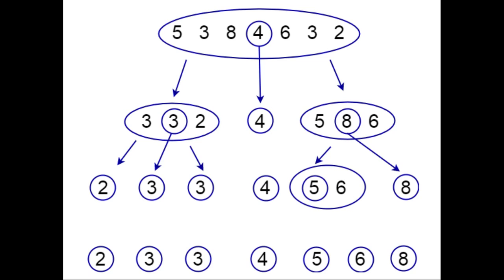Eight is greater than four, so it will be placed on the right side. Six will be compared with four and placed on the right side. Three again will be compared — it is lesser, so it will be placed on the left side. Two will be compared and it will be placed on the left side. Now you have got a divided list.